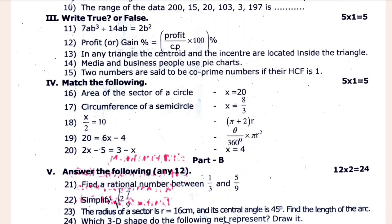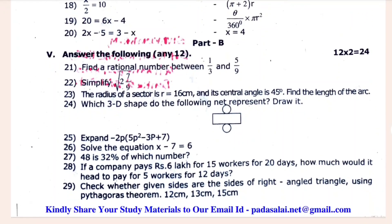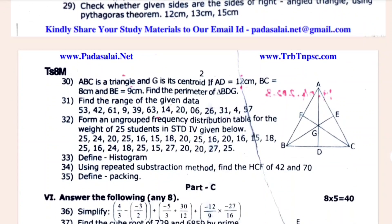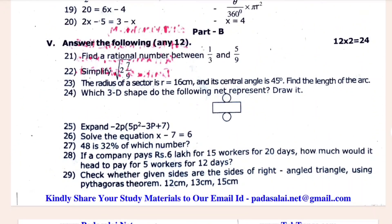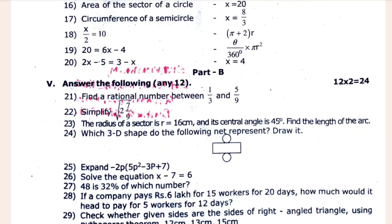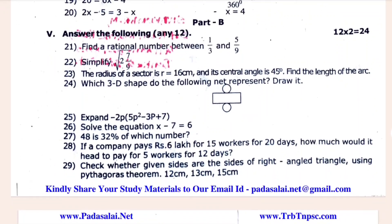If you want to use this, click on the link in the description. If you want to check that link in the description below, you can get the check in the description. First, find a rational number between 1/3 and 5/9 and simplify the route of 2.7 divided by 9. The radius of a hectare is 6cm. Look at the diagram at 21-21cm.